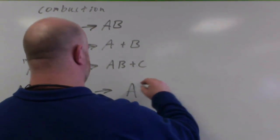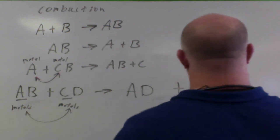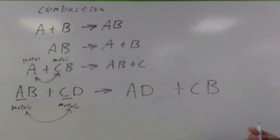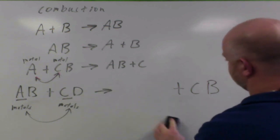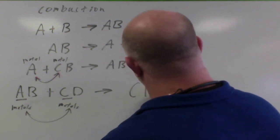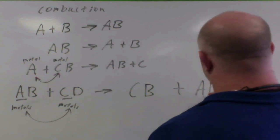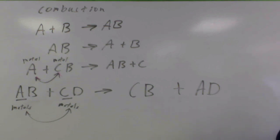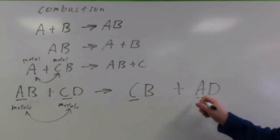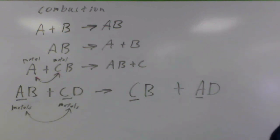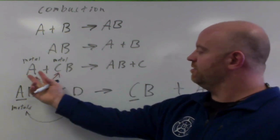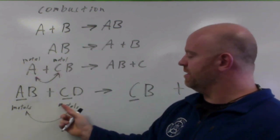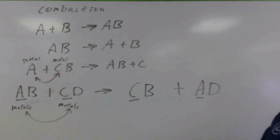So C and A flip. C now binds to B, A now binds to D. We end up getting A and D together, and C and B together. You could also write it as CB plus AD — it doesn't matter which order. But you have to put C first and A first, because they're your metals and they're written first in the reaction. So single displacement and double displacement do the same mechanism, where they just take the similar element — metal to metal — and they just change places.